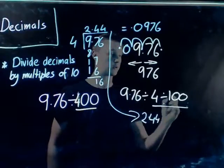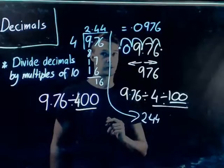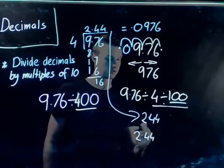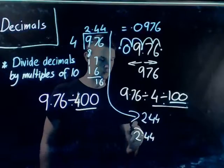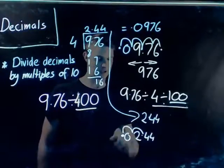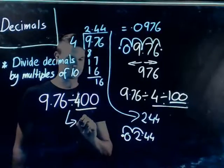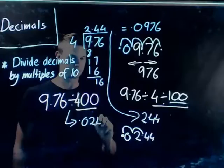And then at the end, all I need to do is make sure I do this again. I divide it again by 100. So, remember, when we divide by 100, we move 2 to the left, 1, 2, and there's my answer there.